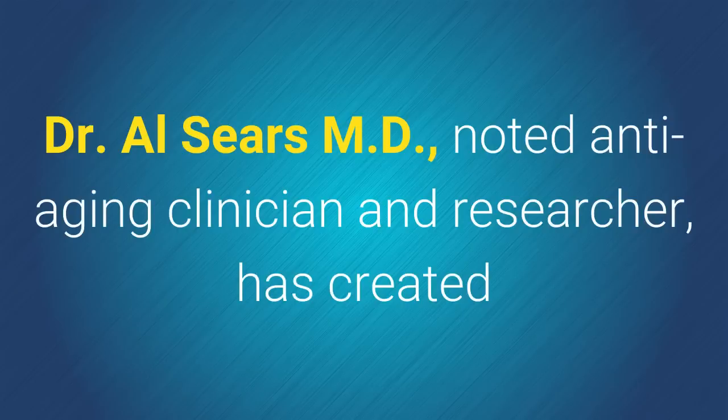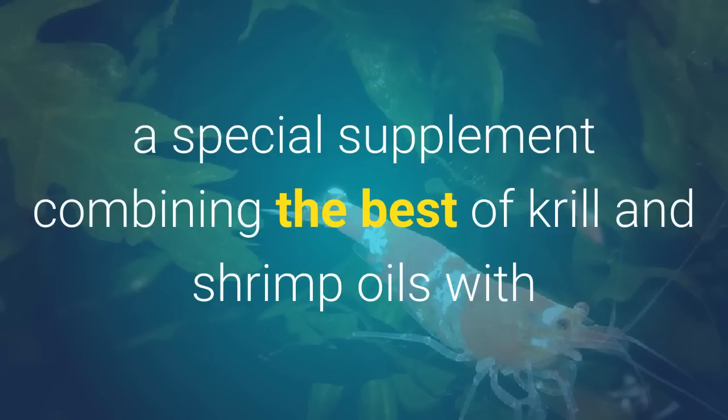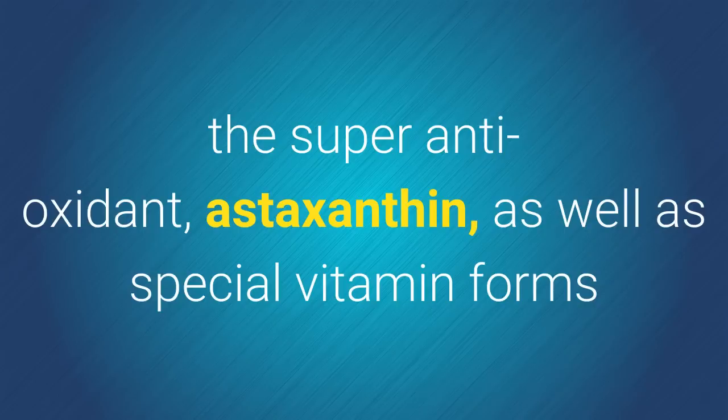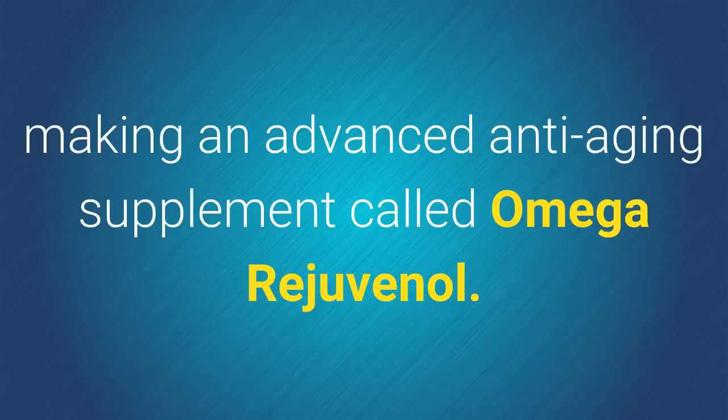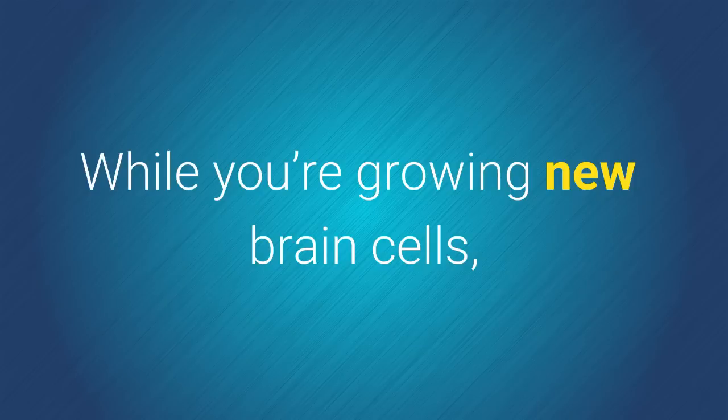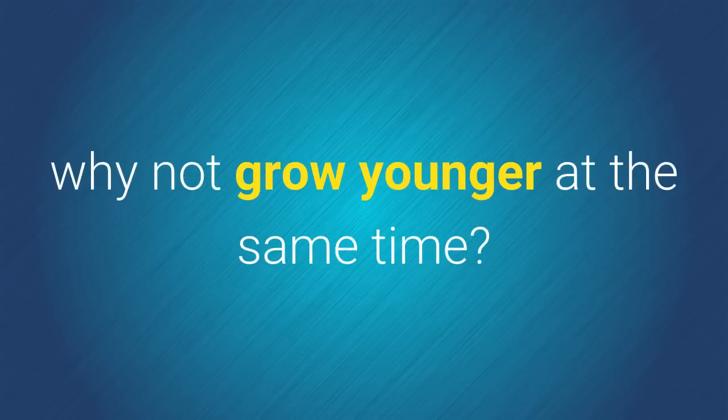Dr. Al Sears, noted anti-aging clinician and researcher, has created a special supplement combining the best of krill and shrimp oils with the super antioxidant astaxanthin as well as special vitamin forms, resulting in an advanced anti-aging supplement called omega-rejuvenol. While you're growing new brain cells, why not grow a younger brain and a younger body at the same time?